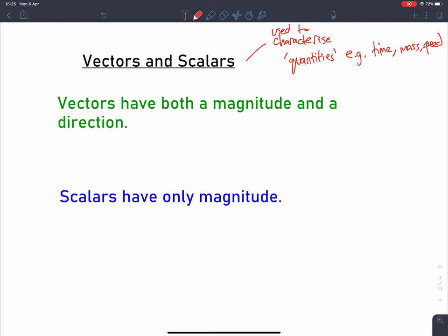Vectors, as we can see here in green, have both a magnitude and a direction. To give you an example, we might have a force, which is an example of a vector. So we might have a force of two newtons to the right. The magnitude of the vector is the size, that's the number here. So in this case, the magnitude would be two, and the direction is to the right.